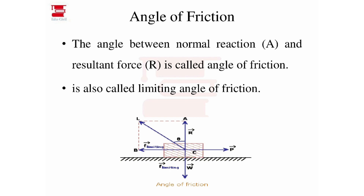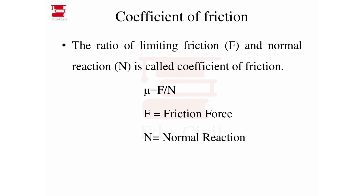The angle of friction is the angle between the resultant of the normal reaction and the limiting friction, where the resultant is inclined to the normal reaction. The coefficient of friction, Mu, is equal to F divided by N, where F is the frictional force (limiting friction) and N is the normal reaction.